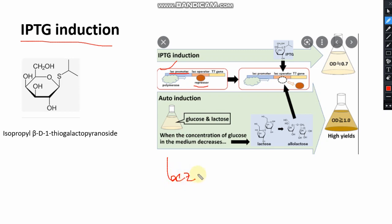The lacZ gene encodes for beta-galactosidase. The main function of beta-galactosidase is to break down the lactose for uptake by the bacteria, and then the bacteria start transcription. When there is no lactose, this system is turned off and there is no beta-galactosidase. That is why, for recombinant protein production in the lab using a bacterial expression system, we need to add something to induce it.